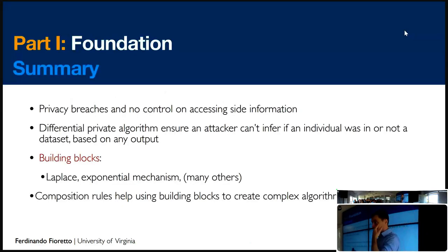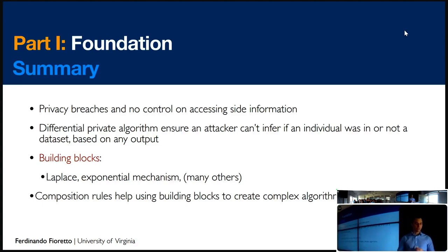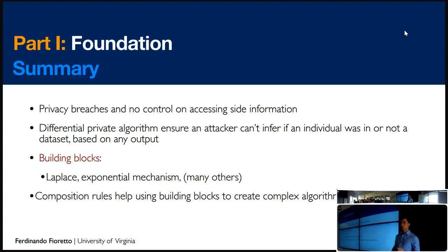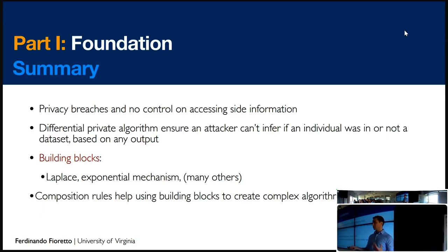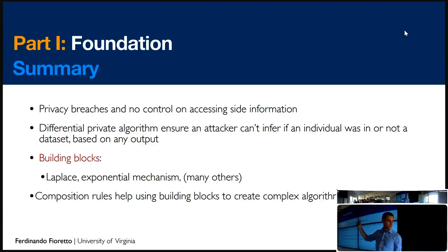Another important property of differential privacy is that it is immune to post-processing: whenever you release an output from a differentially private mechanism, you can alter that output with any probabilistic mapping that is not data-dependent, and the outcome still preserves the same privacy guarantees. This is beautiful because it's useful to release something differentially private — you can use it in your study, give it to the public, and it can be used in other studies. As long as any subsequent function does not access the original data, you can still release those answers without leaking any more privacy.